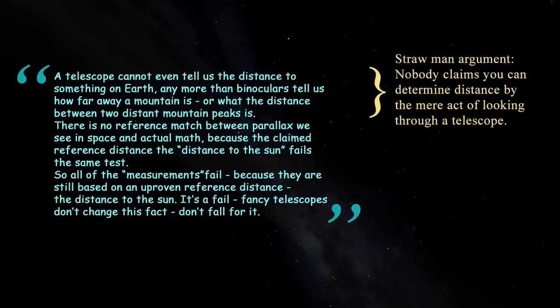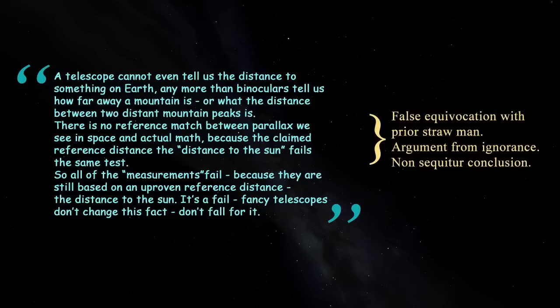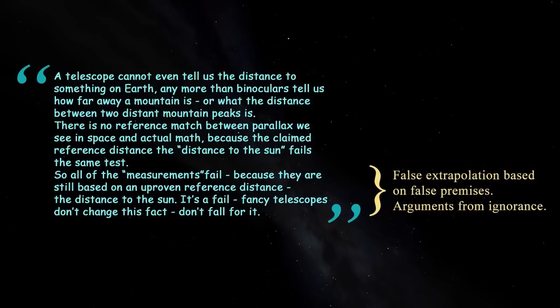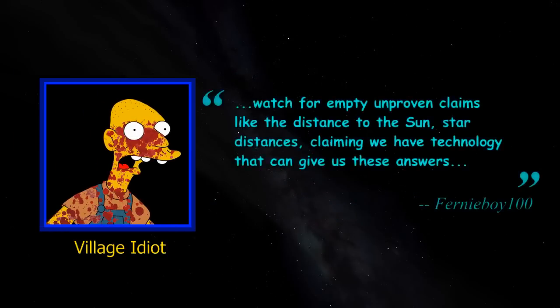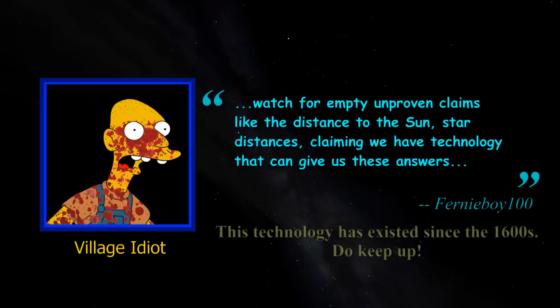Some geocentrists claim that the simple mathematics of parallax somehow don't work when it disagrees with their holy book. One such example is fundamentally dishonest Bible Gimp and Golden Crocoduck nominee, Fernyboy100. In his latest video he claims that we can't know the distance to the Sun as if geometric principles mysteriously stop working when they become inconvenient.